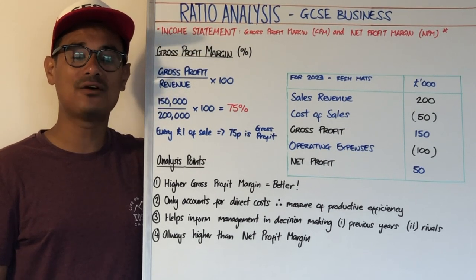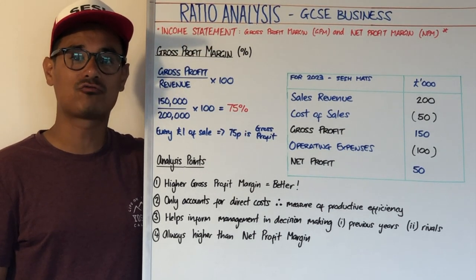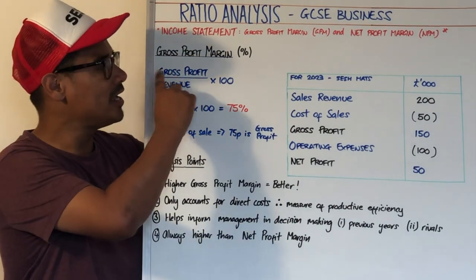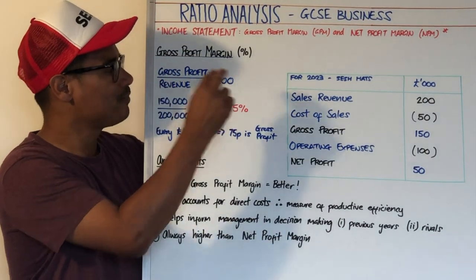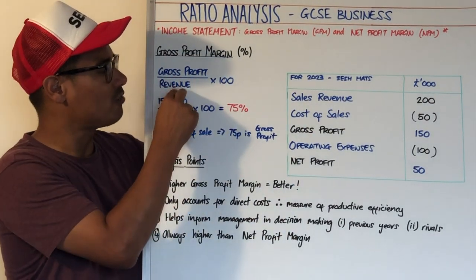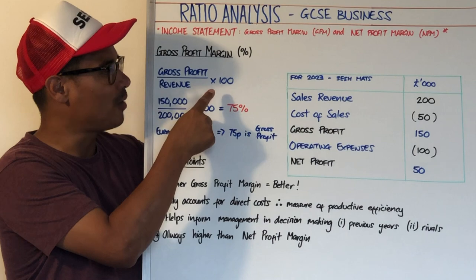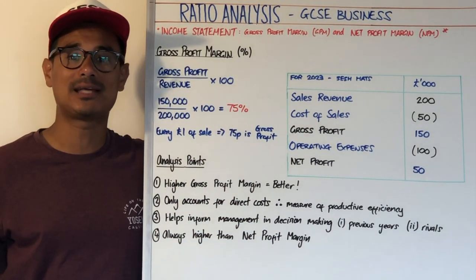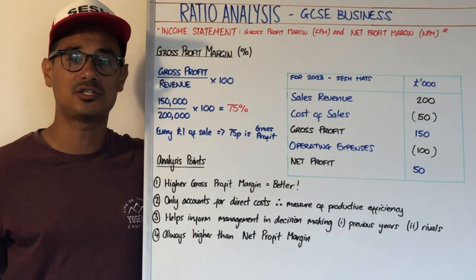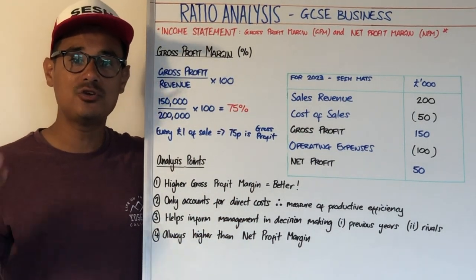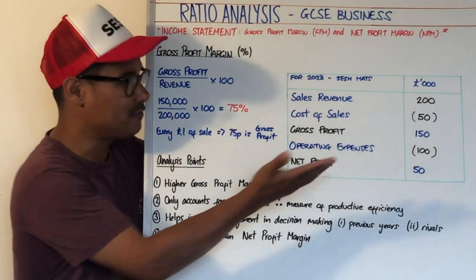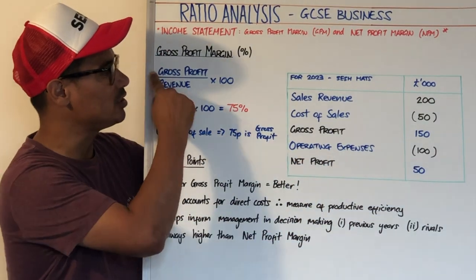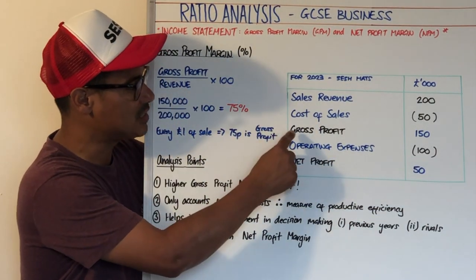We're going to deal firstly with gross profit margin. The formula for gross profit margin is gross profit divided by revenue, times by 100, because it's expressed as a percentage. Now if we use the income statement over here to try and find this information, we see gross profit is there.